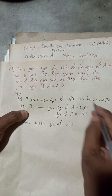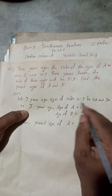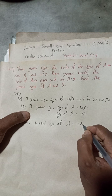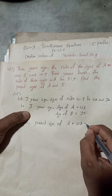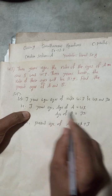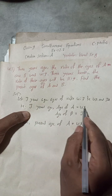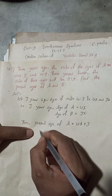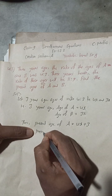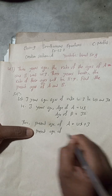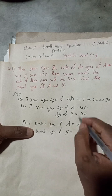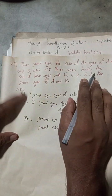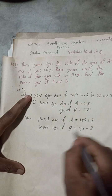If this is the age three years ago, then the present age of A will be 4X plus 3. In the same way, present age of B will be 3X plus 3.